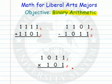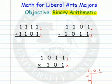Alright, so you want to add two numbers. Remember, the only digits you have in binary are 0 and 1. So, just a little refresher on addition: 0 plus 0 is 0. 0 plus 1 is 1. 1 plus 1 would be 1, 0.